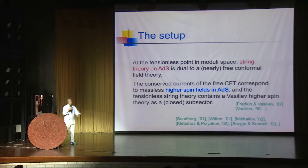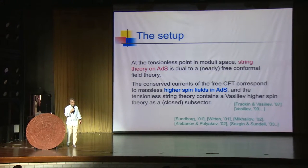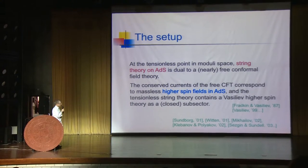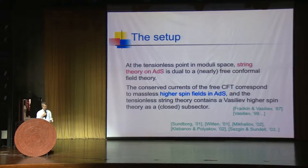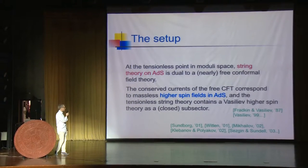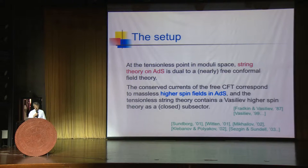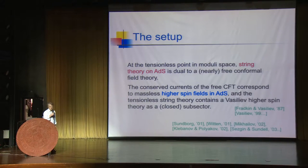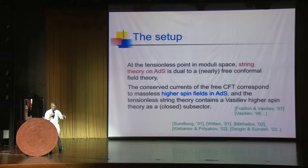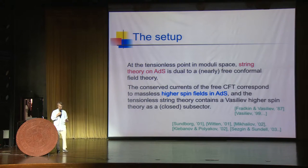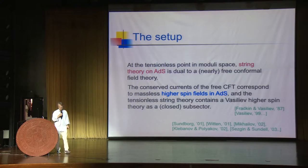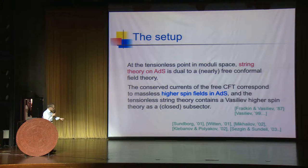Let me remind you about the general setting I'm interested in. At a tensionless point in moduli space, string theory in AdS is dual to a nearly free conformal field theory, which follows from the usual translation between the parameters. The conserved currents of the free CFT correspond to the massless higher spin fields on AdS. In the tensionless limit, string theory contains a sector of massless higher spin fields that account precisely for a Vasiliev-like spectrum, having one massless higher spin field for each spin.